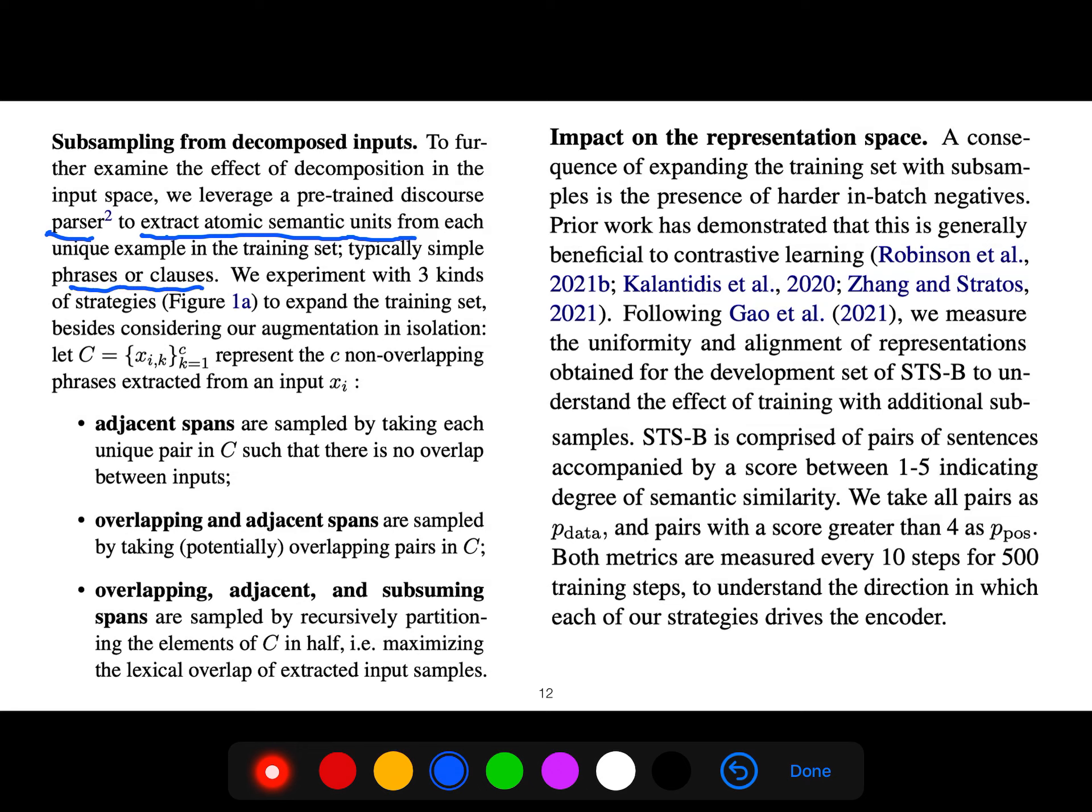You either use adjacent spans, or they are sampled by taking each unique pair such that there is no overlap between the inputs. You can use overlapping and adjacent spans that are sampled by taking overlapping pairs. You can have overlapping, adjacent, and subsuming spans sampled by recursively partitioning the elements in half, maximizing the lexical overlap of extracted input samples.